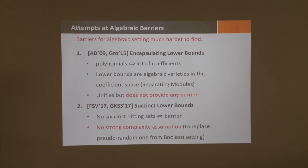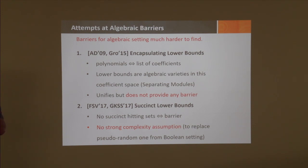The essence of the Razborov-Rudich natural proof is that we cannot prove lower bounds in the Boolean setting because we cannot distinguish the computation of random points from pseudorandom points—and we have believable constructions of pseudorandom generators. You'd like to say exactly the same thing in the arithmetic setting: we cannot prove lower bounds because we cannot distinguish random polynomials from pseudorandom polynomials. But we have no idea what a pseudorandom polynomial is, and we have no believable assumption. Aronson and Drucker tried to come up with an idea but it's not successful.